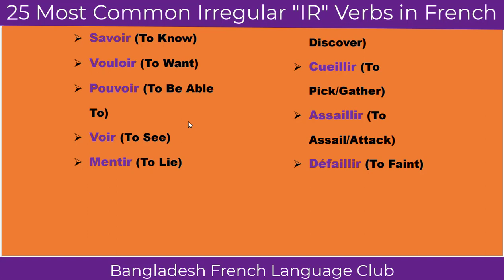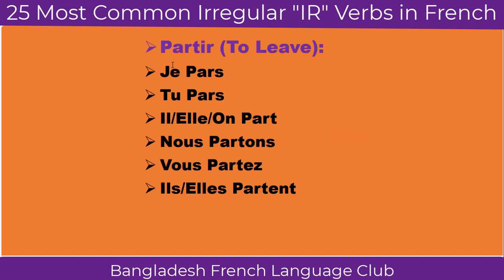So, here is the list of the most 25 commonly used irregular verbs in French. Now we are going to see the conjugation of these verbs with the subjects.